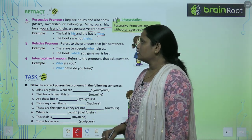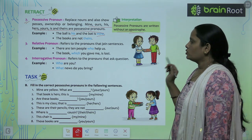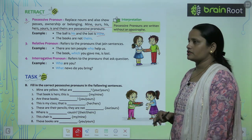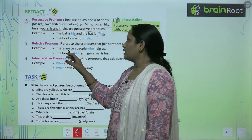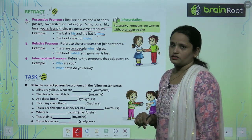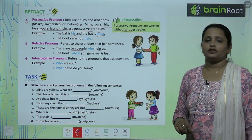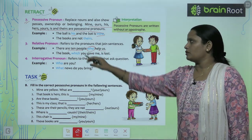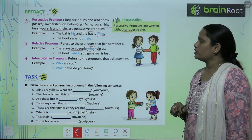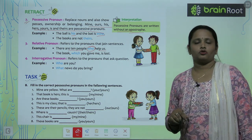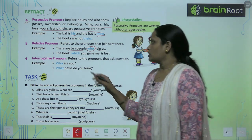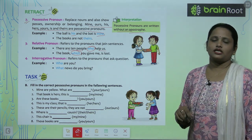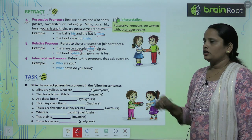Next is relative pronouns. These refer to pronouns that join sentences together. For example: 'There are ten people who help us' — here 'who' joins the two parts. 'The book which you gave me is lost' — here 'which' joins the two clauses. These types of words are called relative pronouns.